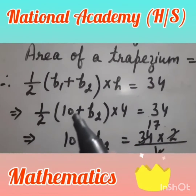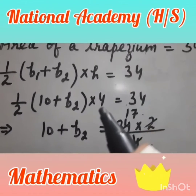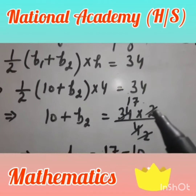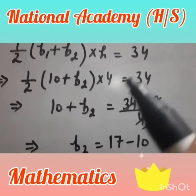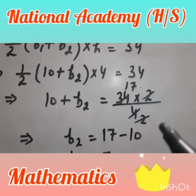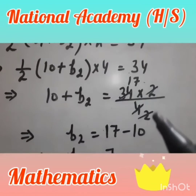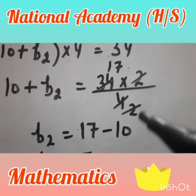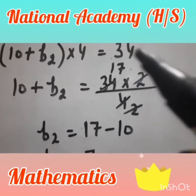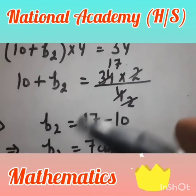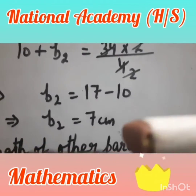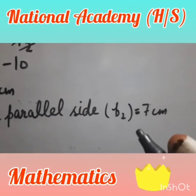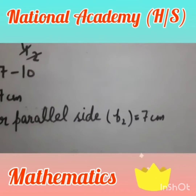So 34 = half × (10 + B2) × 4. Simplifying: 2 and 4 cancel to give 34 = (10 + B2) × 2, then 17 = 10 + B2, so B2 = 17 − 10 = 7 cm. Therefore the length of the other parallel side is 7 cm.